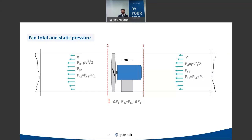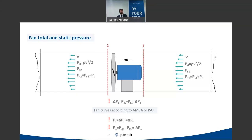A common problem is that customers mix up the static pressure difference across the fan with the fan's static pressure as defined by ISO standards. According to ISO, the total pressure of the fan is the difference of total pressures on inlet and outlet. The fan's static pressure is the difference between static pressure on the outlet and total pressure on the inlet — which is not the same as the simple difference of static pressures. Fan static pressure should be used when the fan has a free outlet, as in Categories A or C.